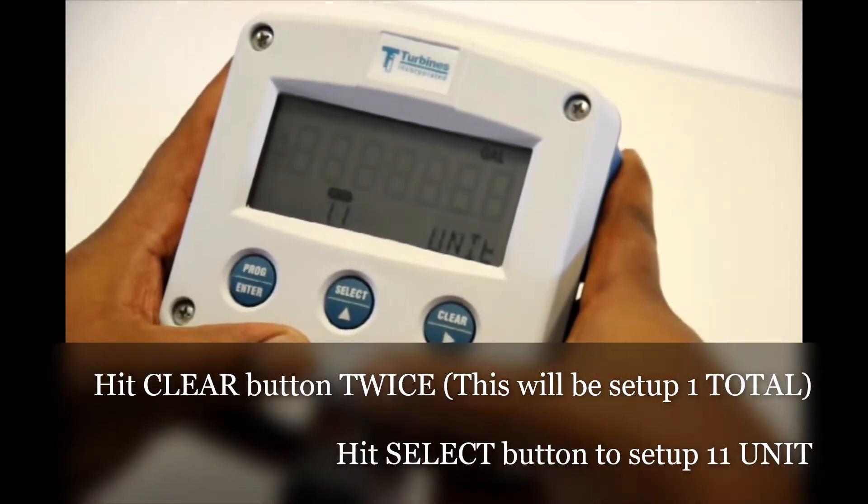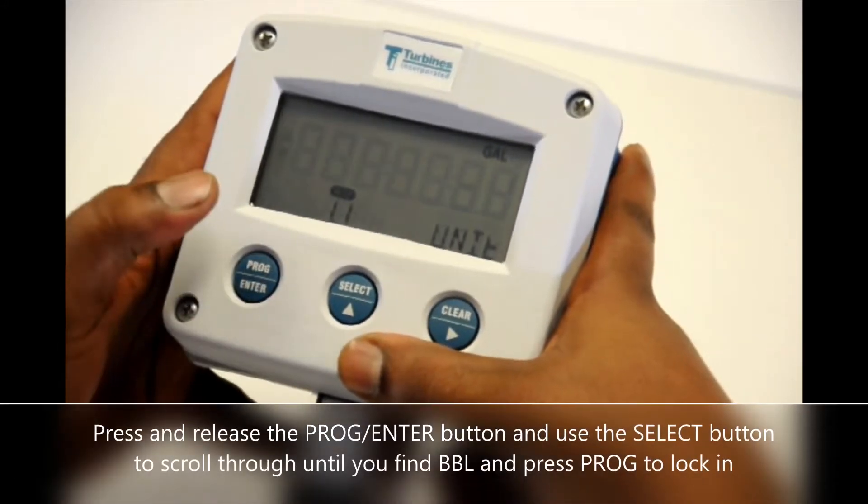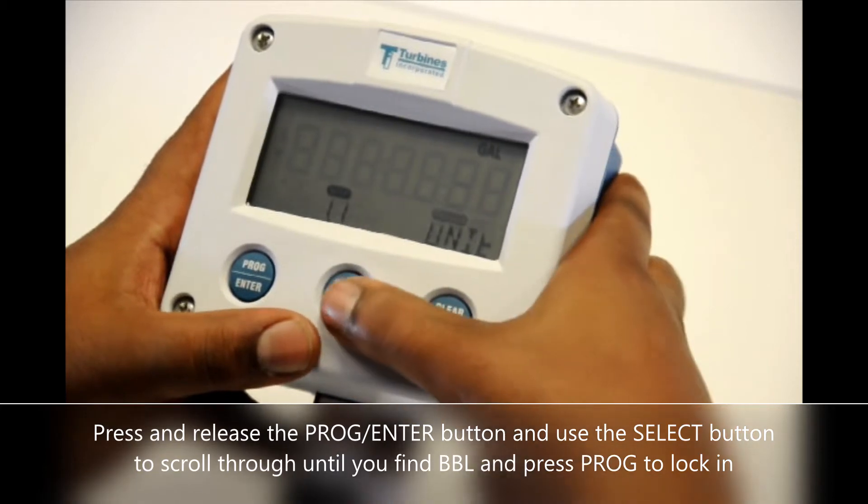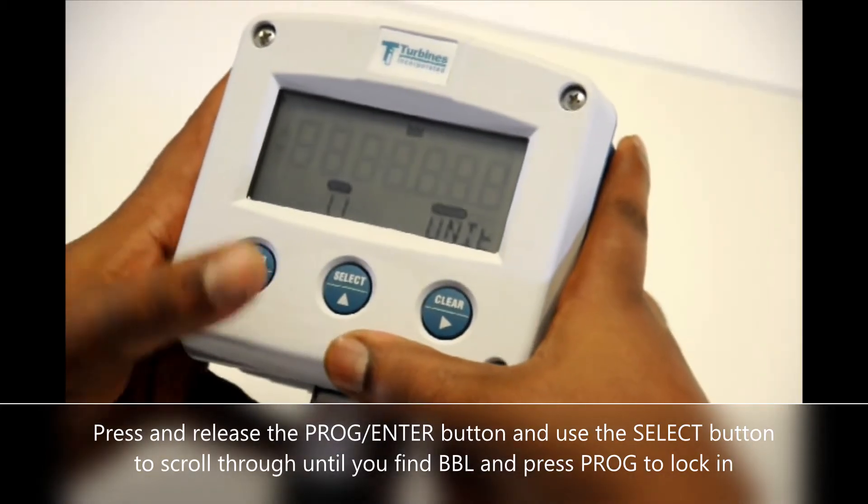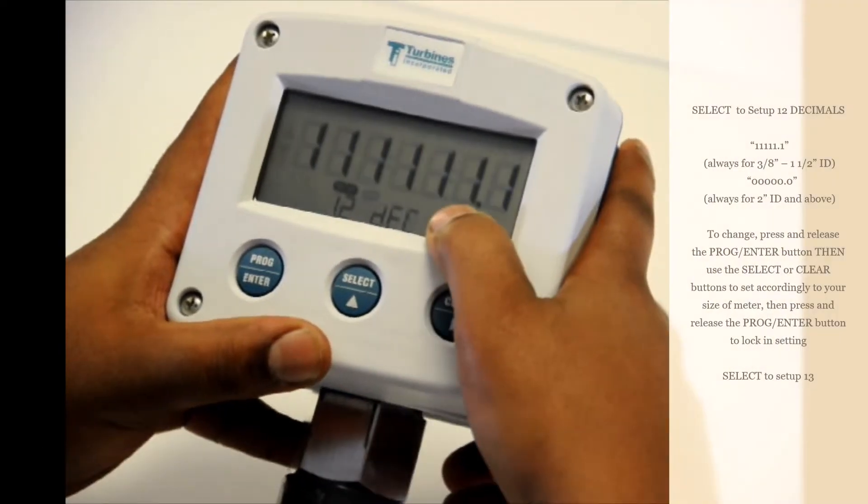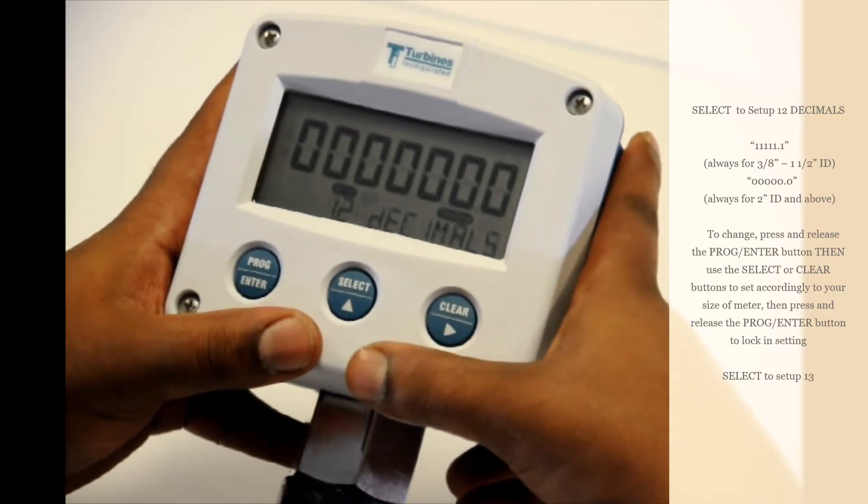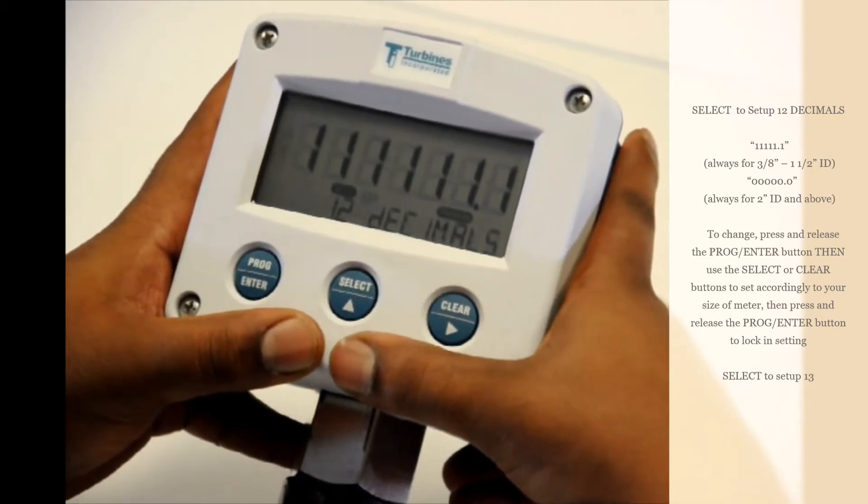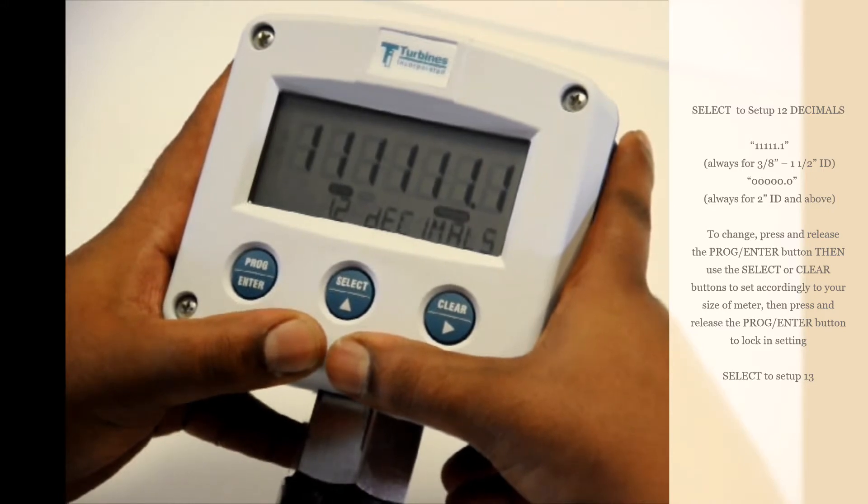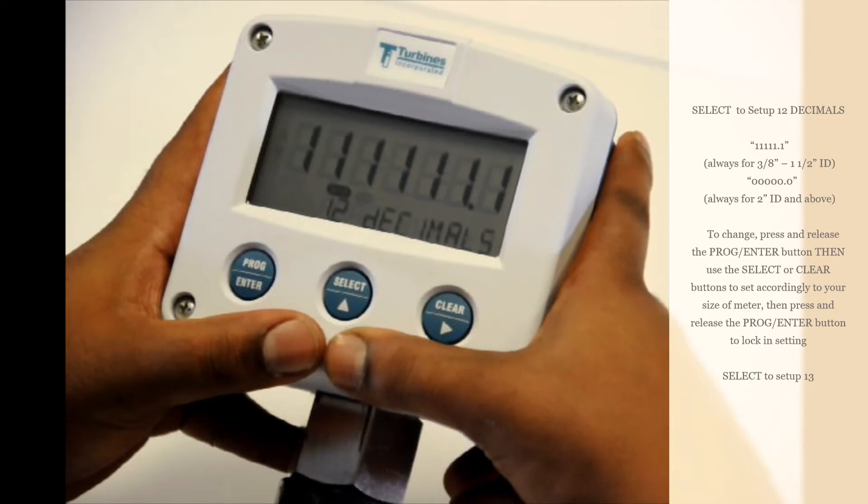Hit select. We'll take us to our first tier asking for a unit. So to change that you're going to hit program enter once. Select so you find BDL. Hit program enter. This will lock it in. This is in tenth of a decimal. That's what the one signifies. If you wanted to change that to a zero just to see a whole number you can do so. In this case we'll be using one set for a tenth of a barrel. So we select one. Program enter. Lock it in.